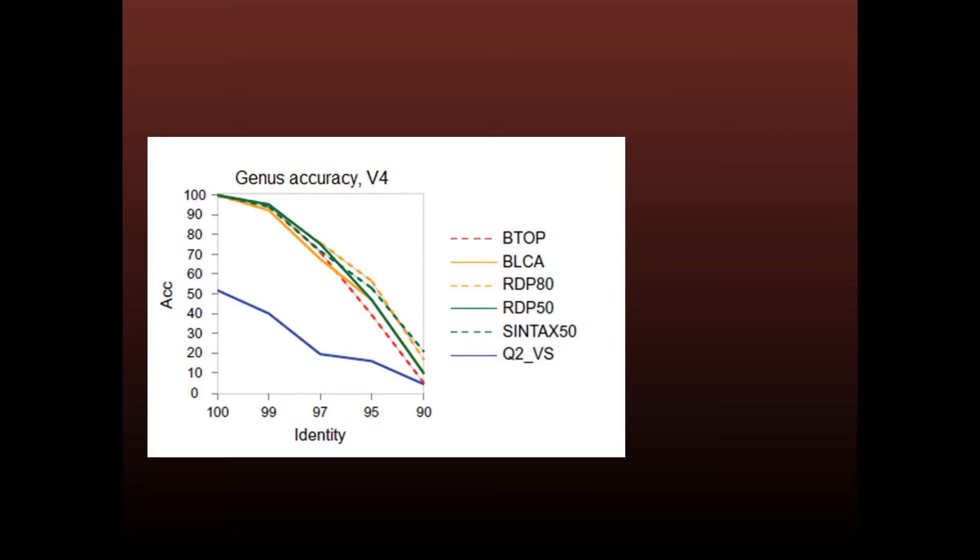Here are some typical results. This plot shows the accuracy of genus predictions for the V4 region. I tested several methods, including the RDP classifier at 80% and 50% bootstrap confidence, SINTAX at 50% bootstrap and a consensus method from QIIME version 2. Notice that accuracy falls rapidly with identity. So as you would expect, taxonomy prediction gets harder as the query sequences diverge from the reference database.